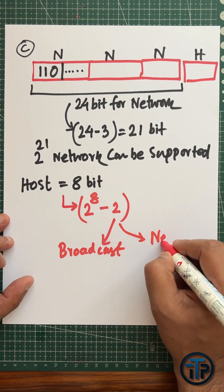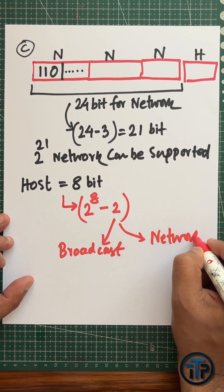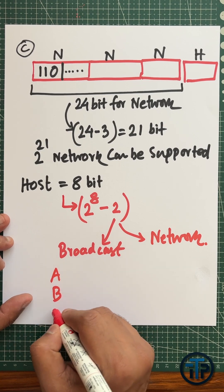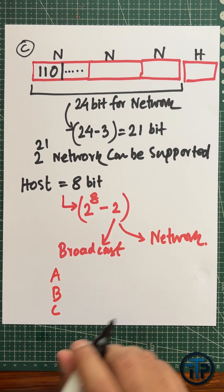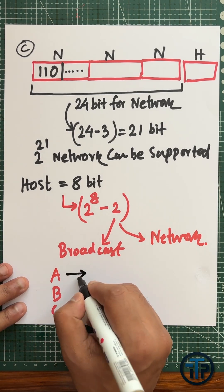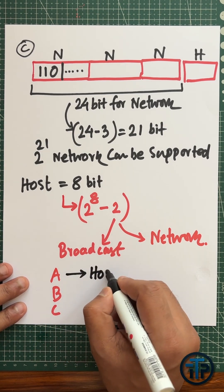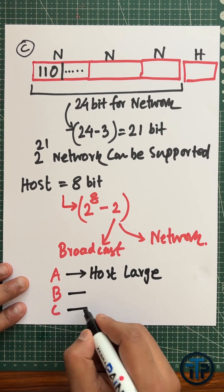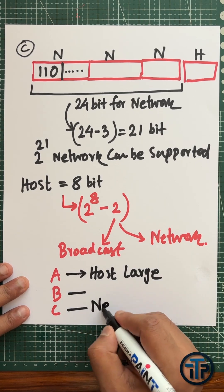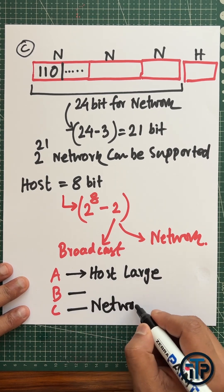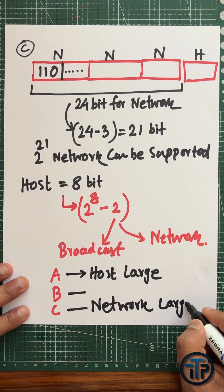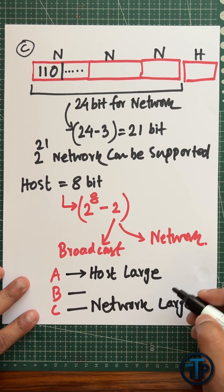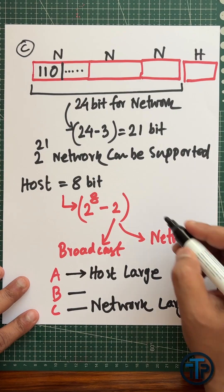Similar to the previous classes, one address is used for broadcast and one for the network address. As a general conclusion across Classes A, B, and C: Class A has the highest number of hosts per network, while Class C supports the largest number of networks among the three classes.